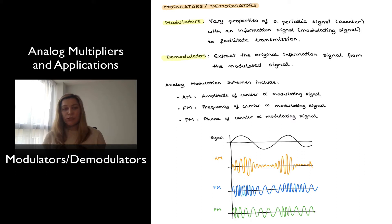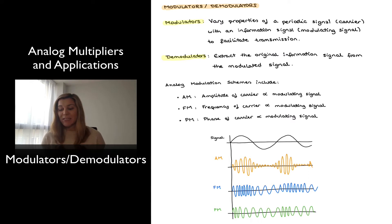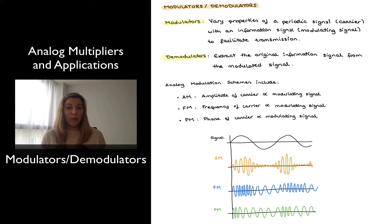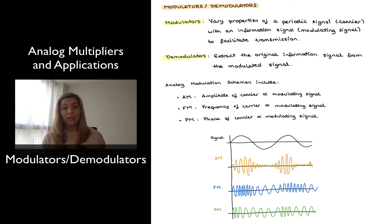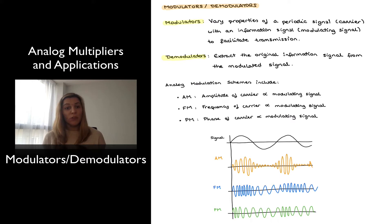Analog multipliers can be used for modulation and demodulation of analog signals in what are known as analog modulation schemes, as opposed to digital modulation schemes, which basically modify a signal for transmission but this is a digital signal. In the case of analog modulation schemes, we are talking about an analog signal that is being primed for transmission, and there are different modulation schemes.